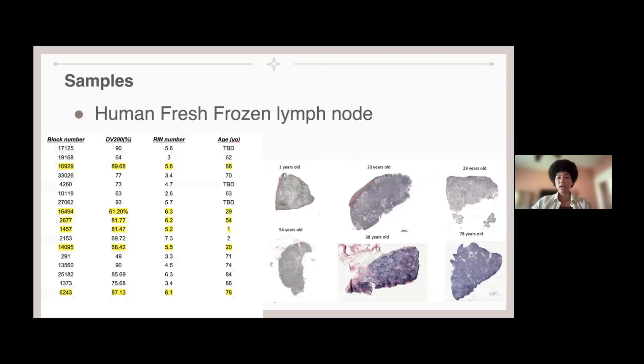And so for our samples, we use human fresh frozen lymph node. Ages ranged from one to 78 years old. Highlighted are the RIN numbers for the six tissues shown.